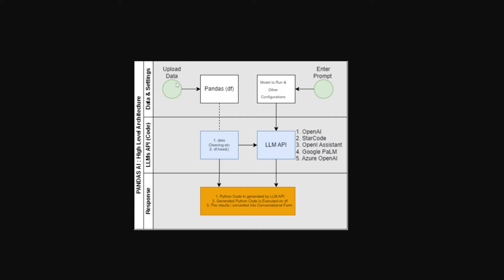The data is already loaded, you give the large language model the columns of the DataFrame, and it eventually generates the logic you need to get the result you want. It's similar to LangChain but has three clear steps: first, the data and the prompt; second, the large language model generates Pandas code; and third, the response — the final result. The code is generated by the LLM API, executed using the DataFrame, and the result is converted into a conversational response rather than just a raw number.